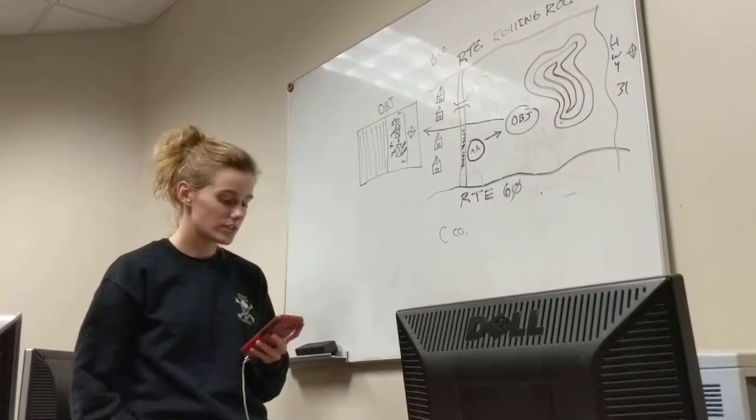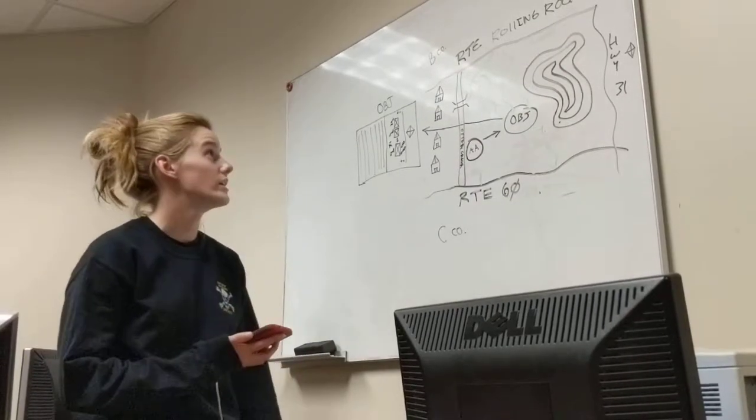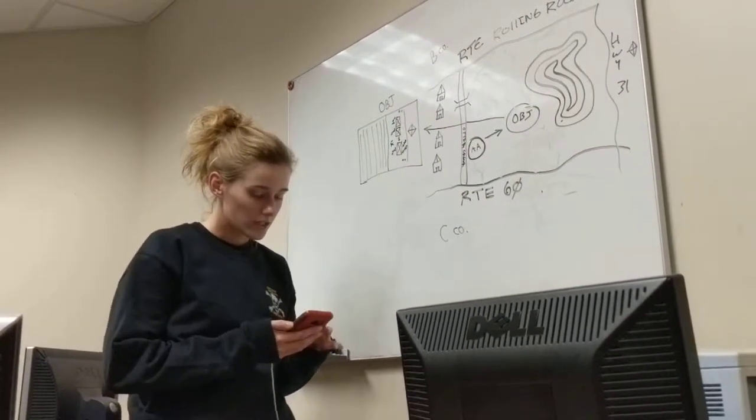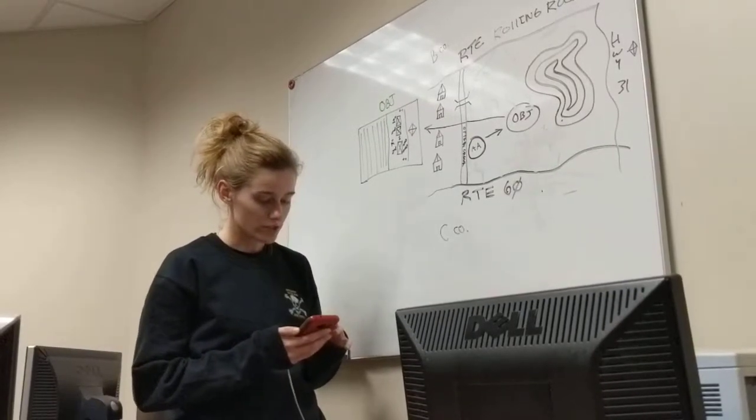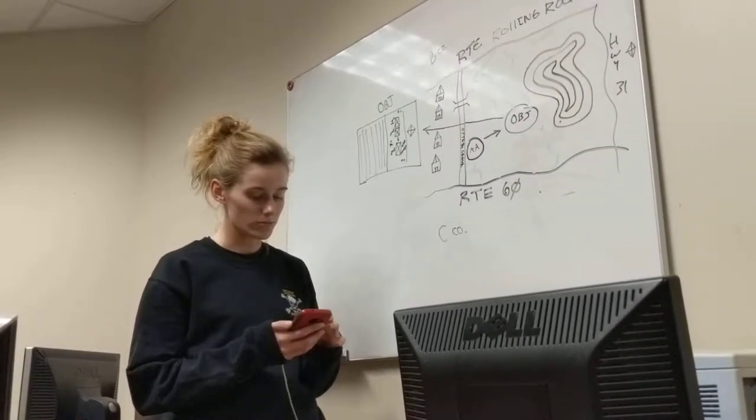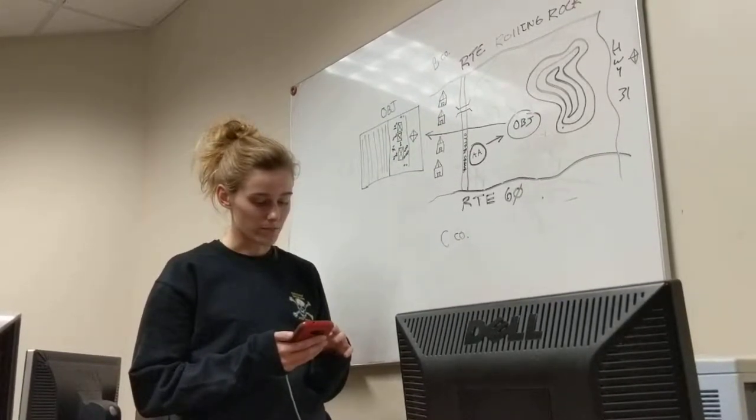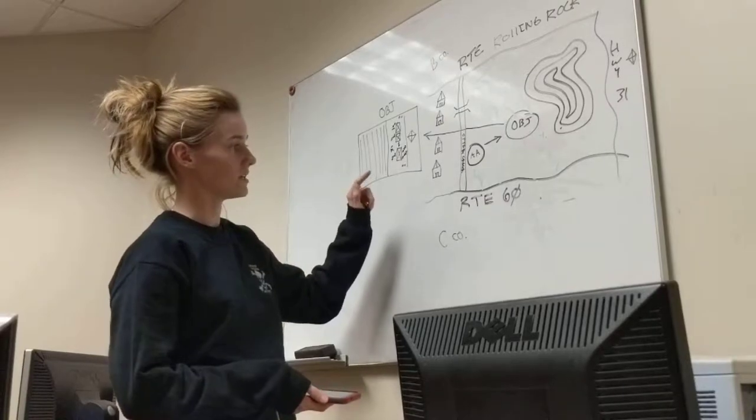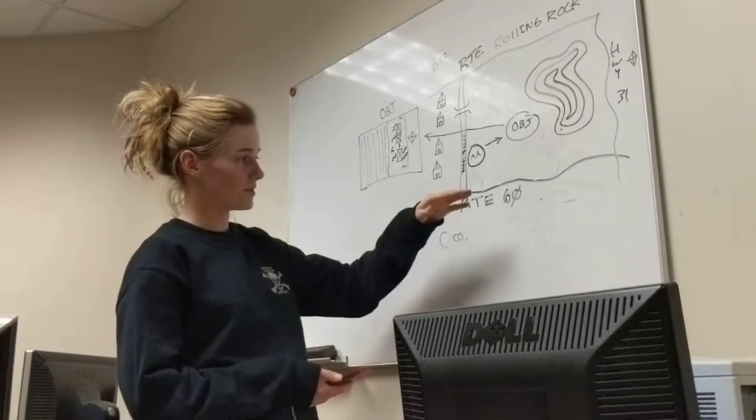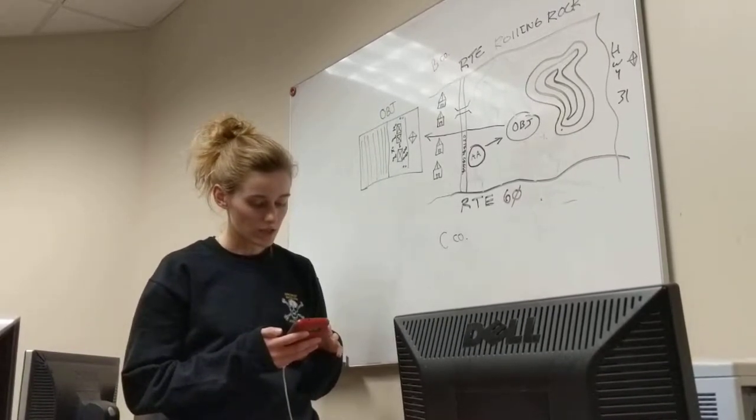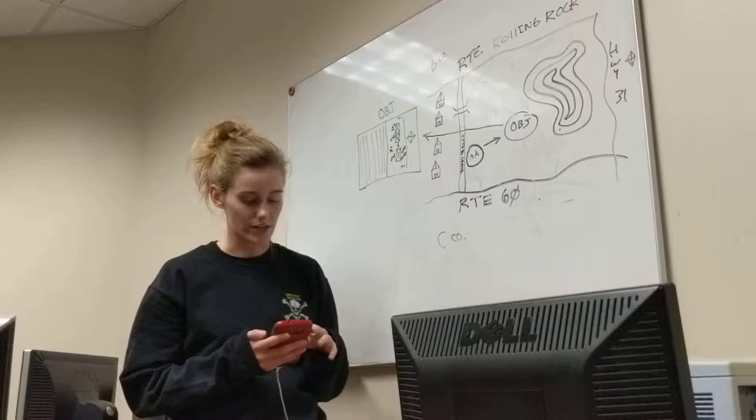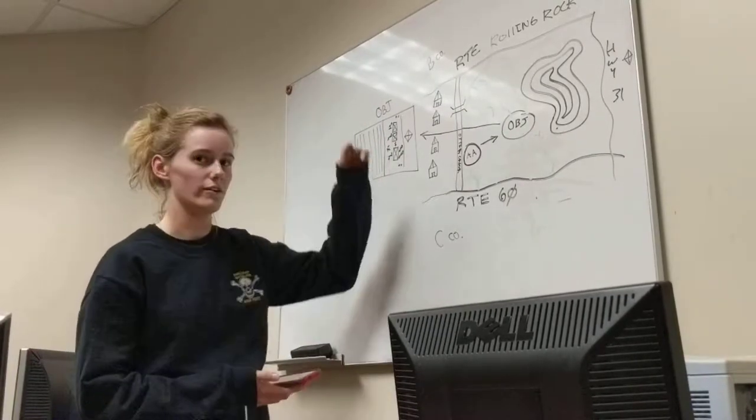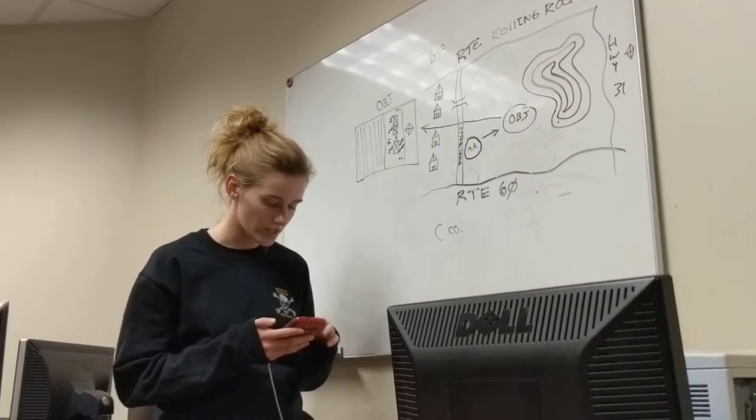So our area of interest, Bravo Company is going to be operating above our northern limit of Route Rolling Rock. They are going to be conducting their offensive operations against retreating Aryan forces, potential for enemy movement between the two AOs, and requirement to coordinate any cross-boundary fire maneuvers. So then Charlie Company is going to be south of our southern limit, which is Route 60, and they're going to be also counteracting retreating Aryan forces, the same as Bravo Company, so which either way they decided to retreat will have a company there to counteract that.